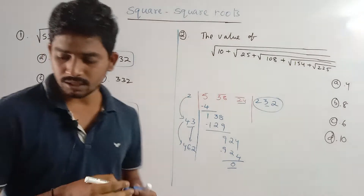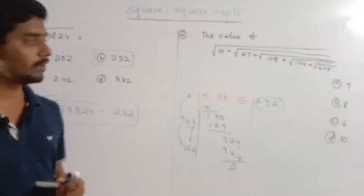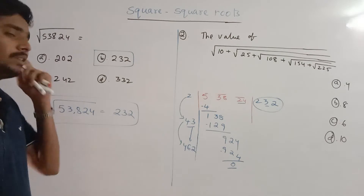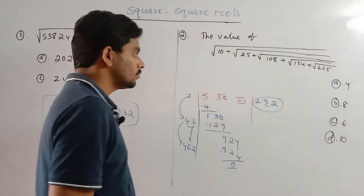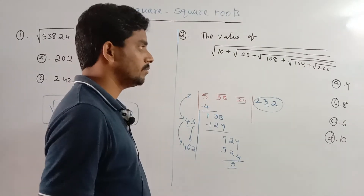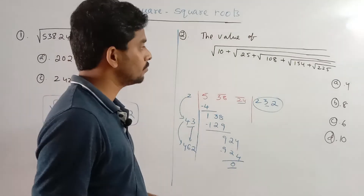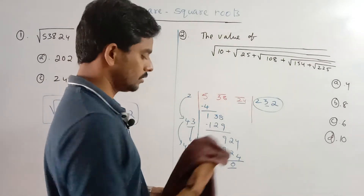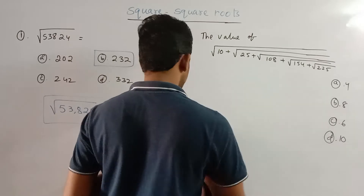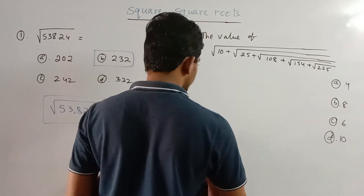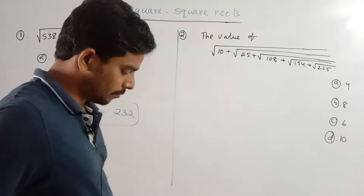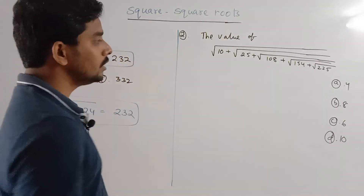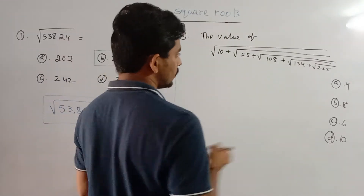Now the next problem: find the value of √10 + √25 + √108 + √154 + √225. We need to simplify each root step by step.